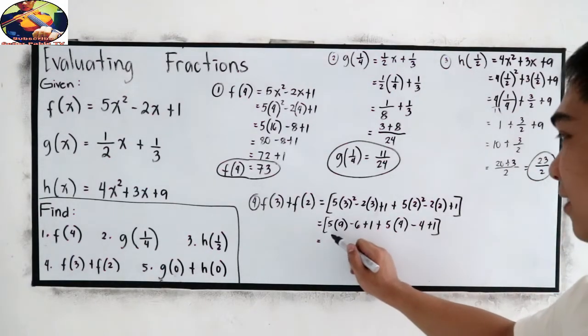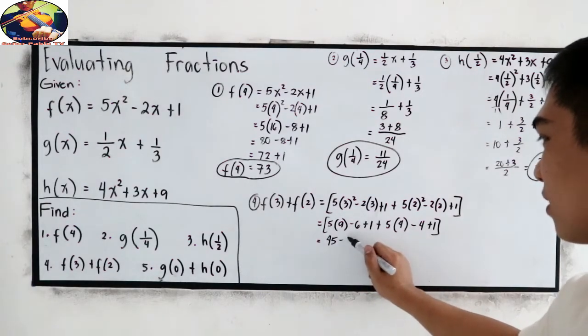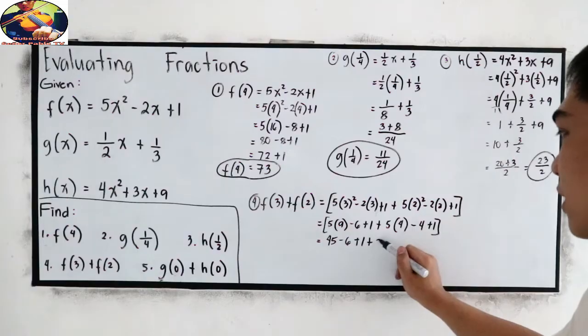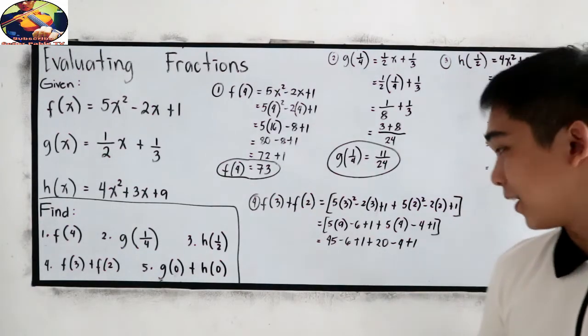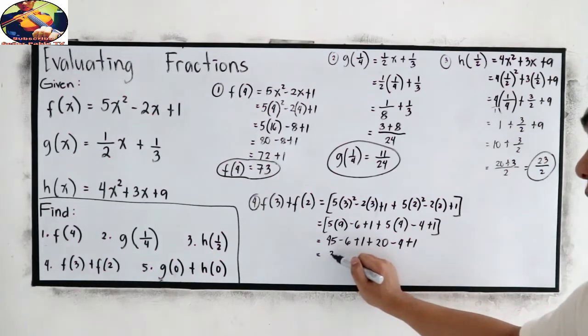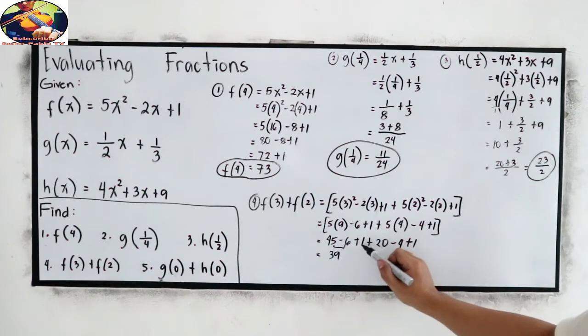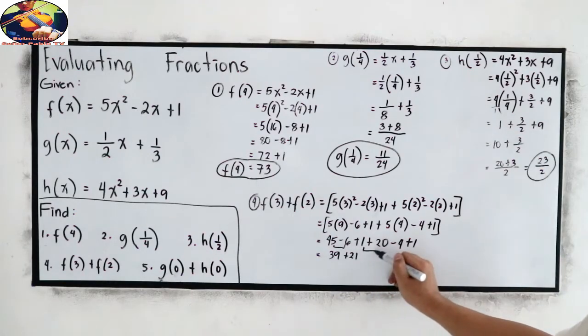5 times 9, that is 45, minus 6, plus 1, plus 5 times 4, which is 20, minus 4, plus 1. Okay? 45 minus 6, this is 39. This is 39. 20 plus 1, this is 21. Negative 4 plus 1, which is negative 3.